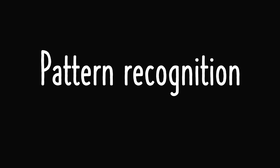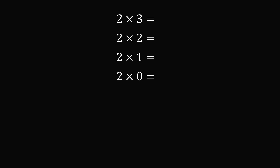Let me begin with one of the simplest explanations, which is pattern recognition. Imagine you're a mathematician thousands of years ago, and you're computing a list of products. We start out with 2 times 3, which is equal to 6. Then 2 times 2 is equal to 4, 2 times 1 is equal to 2, and 2 times 0 is of course equal to 0. Notice when we go from the first line to the second line, we're decreasing the second number by 1, and the result is the product will decrease by 2. We decrease the second number by 1 again, and this decreases the product by 2.